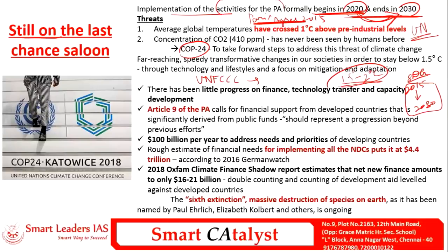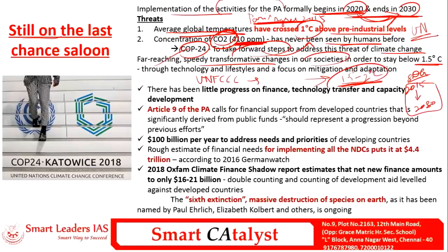The concentration of carbon dioxide in the global atmosphere is 410 ppm, a level never seen in the human era. To take steps to tackle this, COP24 stressed the need for far-reaching, speedy, transformative changes in society to maintain temperature at 1.5 to 2 degrees Celsius. This should be achieved through technological changes and lifestyle or behavioral changes of both developed and developing countries, with a focus on both mitigation and adaptation.